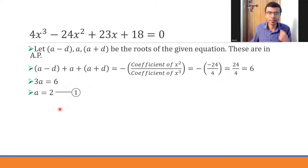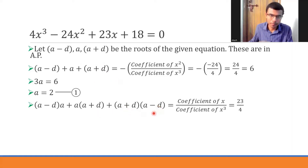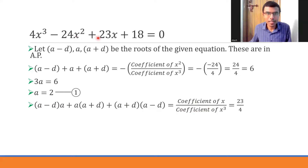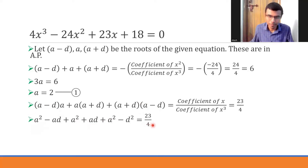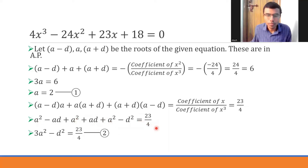Now I'll find the product of roots taken two at a time: (a minus d)(a) + (a)(a plus d) + (a plus d)(a minus d), which equals the coefficient of x divided by the coefficient of x³. The coefficient of x is 23 and of x³ is 4. Simplifying the left side: a² minus ad plus a² plus ad plus a² minus d², the ad terms cancel, giving 3a² minus d² equals 23 by 4. I'll mark this as equation 2.